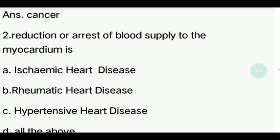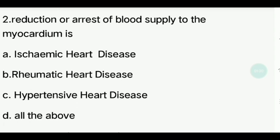Second question. Reduction or arrest of blood supply to the myocardium — what is the name of this disease? Options: Ischemic heart disease, Rheumatic heart disease, Hypertensive heart disease, All the above. Answer is Ischemic heart disease.